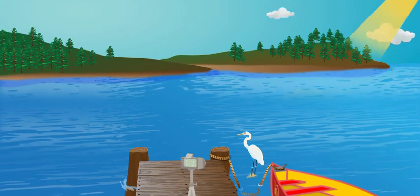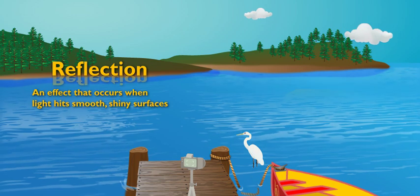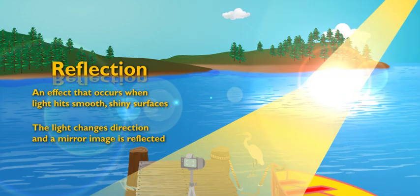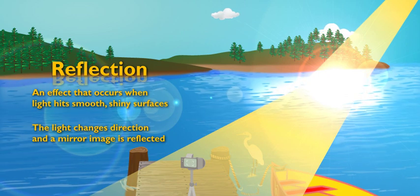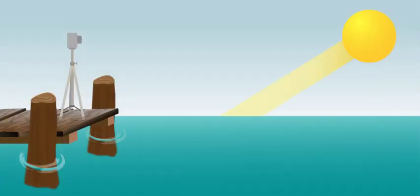Well, light travels in a straight line, right? Yeah, I know that. So when it hits smooth, shiny surfaces like water or metal, a mirror image of the light source is reflected or bounces off. And ends up over here? How? Simple. Angle in equals angle out.